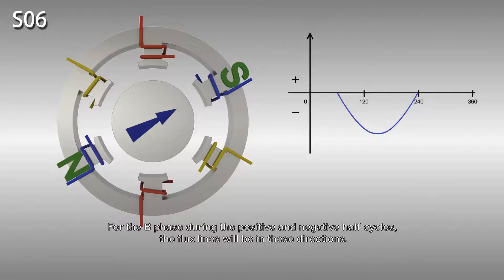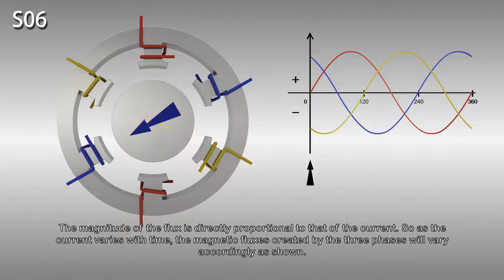The magnitude of the flux is directly proportional to that of the current. As the current varies with time, the magnetic fluxes created by the three phases will vary accordingly as shown.